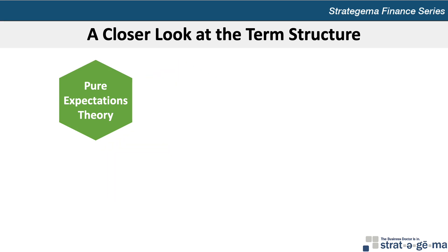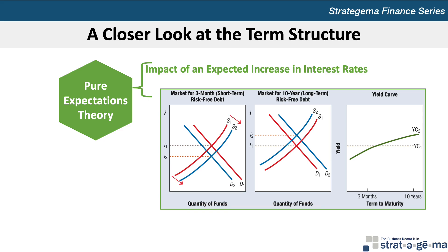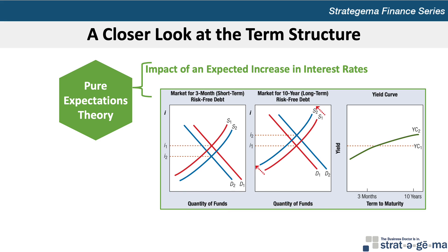Under Pure Expectations Theory, the term structure of interest rates is determined solely by expectations of interest rates. If investors believe that interest rates will rise in the near future, they will invest mostly in short-term risk-free securities so they can soon reinvest at higher yields after rates increase. This causes funds to flow into the short-term market and away from the long-term market, shifting the short-term supply curve of investor funds to the right from S1 to S2, while the long-term supply curve shifts to the left from S1 to S2.